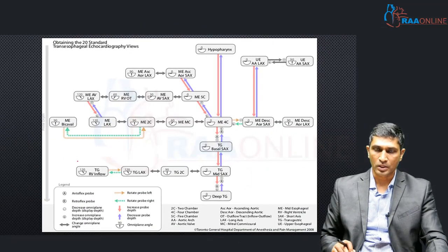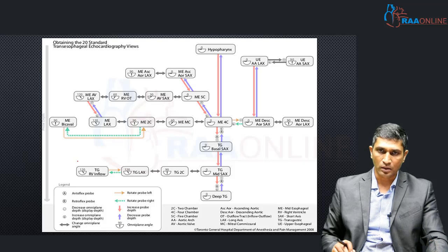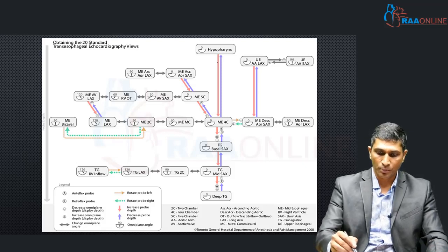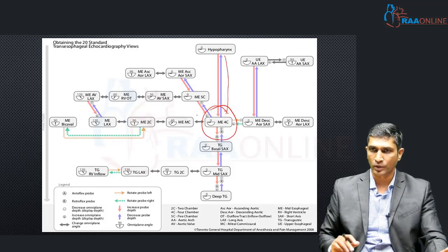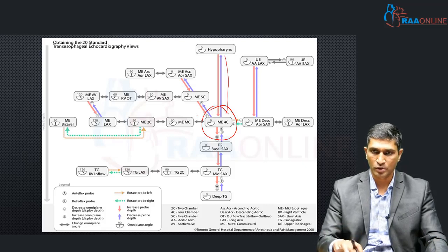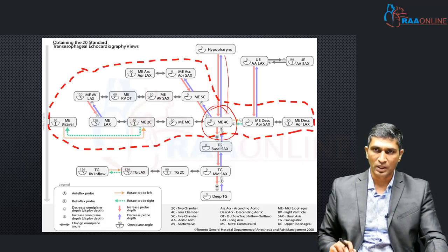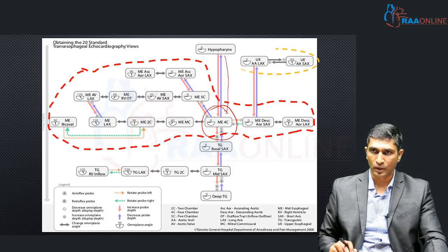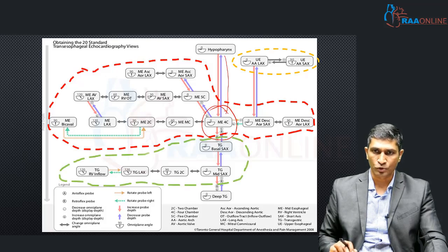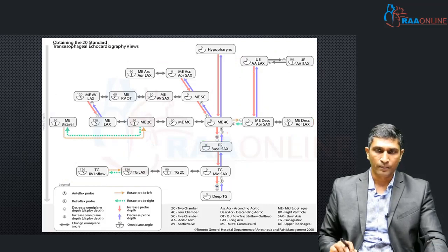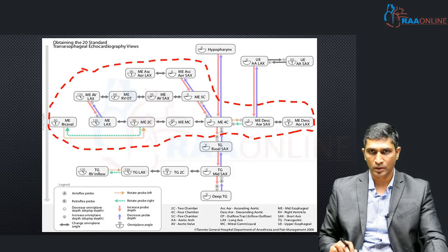This is the Toronto General Hospital flowchart, which provides a systematic review of the 20 comprehensive views. The mid esophageal four chamber view is always the home button — whenever you get lost in the TEE, you always come back to the four chamber view and then start advancing or withdrawing the probe or changing the angle. There are roughly 12 mid esophageal views, two upper esophageal views, transgastric views, and a single deep transgastric view.